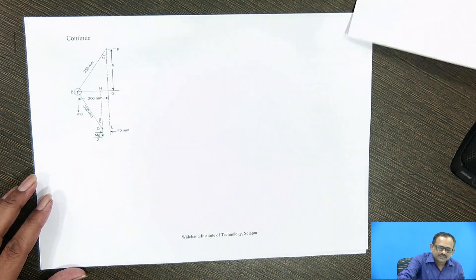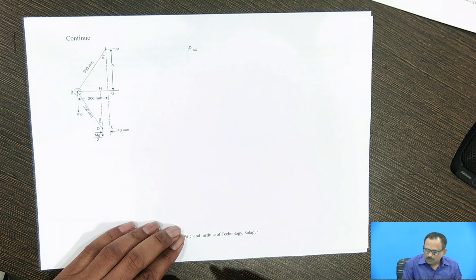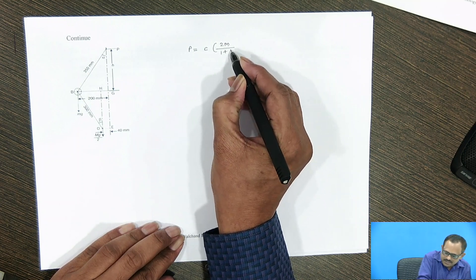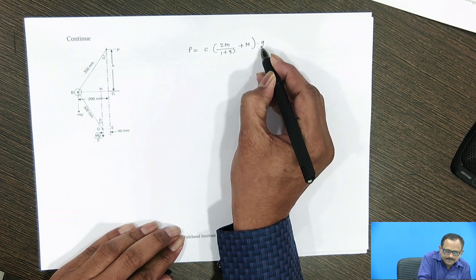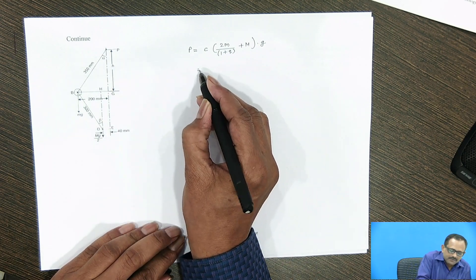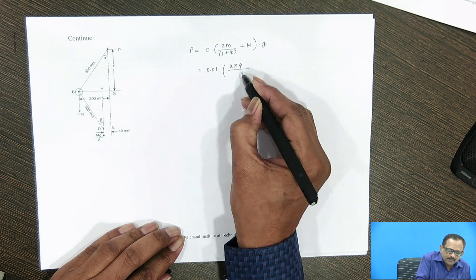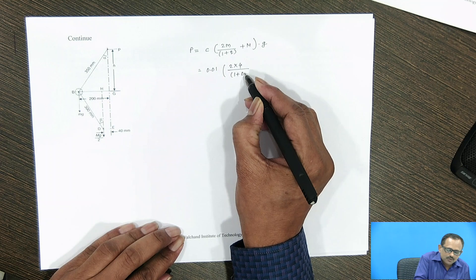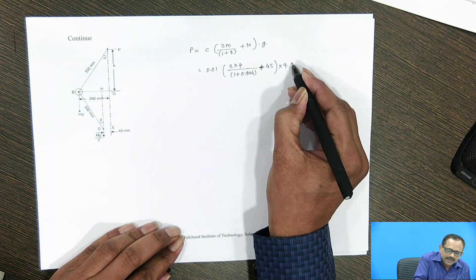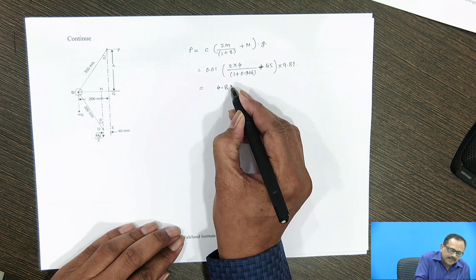Next, we calculate the effort of the governor. The effort P for a Porter Governor is given by c times (2m divided by (1 plus q) plus M) times g. In this case, alpha and beta are not the same. Putting in the values: c is 0.01, m is 4 kg, q is 0.904, M is 45 kg, and g is 9.81. The effort of the governor equals 4.8 Newton.